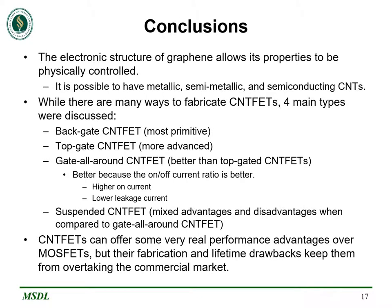In conclusion, the electronic structure of graphene allows its properties to be controlled, and while there are many ways to fabricate carbon nanotube FETs, we discussed four notable ones: back gate, top gate, gate all around, and the suspended CNT-FET. Carbon nanotube FETs can offer some very real performance advantages over MOSFETs, but due to breakdown, unreliability, and mass production impracticality so far, these relatively new devices are nowhere near overtaking MOSFETs. Thank you very much.